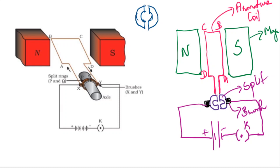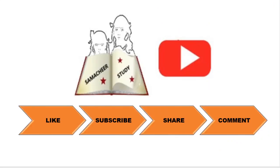When a current-carrying conductor is placed in a magnetic field, it experiences a mechanical force. Electrical energy is converted into mechanical energy in a motor. Hope you understand the principle, construction and working of a DC motor. If you like this video, please subscribe and share it with your friends. Thank you so much for watching.